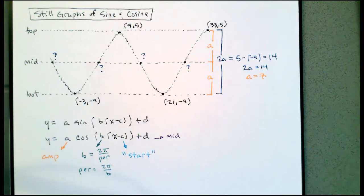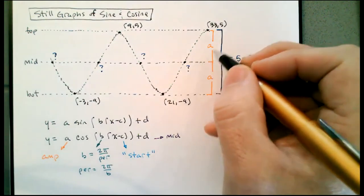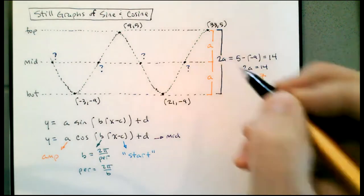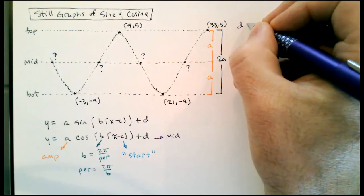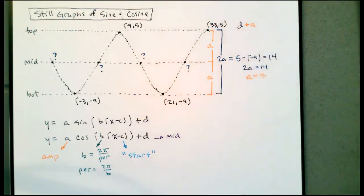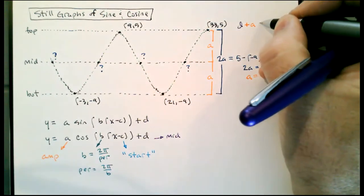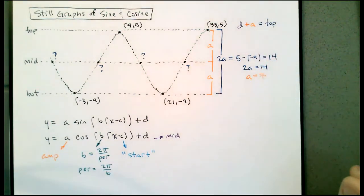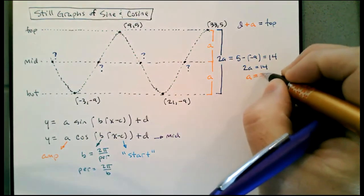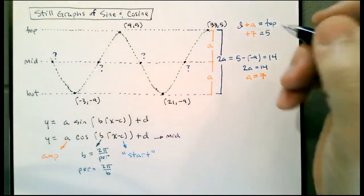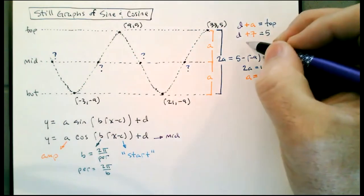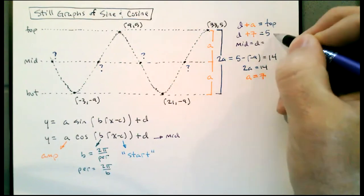Now that I know the amplitude is 7, we can figure out where the middle is. If the middle plus the amplitude lands us at the top, I can use that to figure out where the middle is. So D plus the amplitude gets us to the top. The amplitude is 7, the top is at 5, so the middle D is 5 minus 7, which is negative 2.